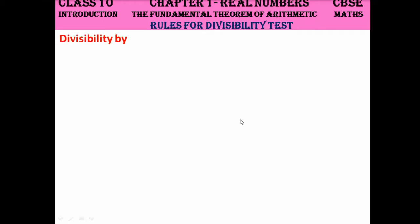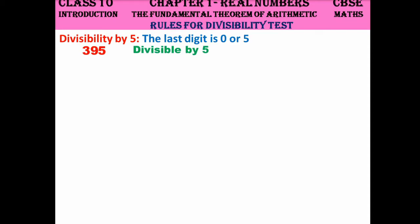Divisibility by 5 is very simple: check whether the last digit is 0 or 5. If it is, the number is divisible by 5. For example, 395 has last digit 5, so it is divisible by 5. For 507, the last digit is 7, which is neither 0 nor 5, so 507 is not divisible by 5.